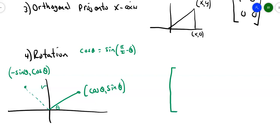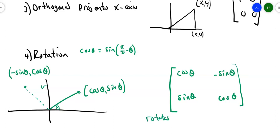It looks a little funny — it's not ones and zeros anymore. Now it's cosine theta, sine theta for the first row, and negative sine theta, cosine theta for the second row. This rotates counterclockwise about the origin by whatever number of radians or degrees theta is.